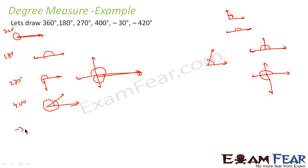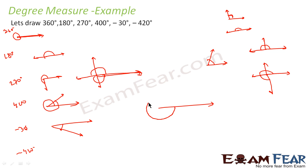For minus 30 degrees: you start with the initial side and rotate 30 degrees in the clockwise direction, giving minus 30. For minus 420 degrees: you take one full clockwise round of minus 360, and then add another minus 60, so the total is minus 420. The full clockwise round plus the additional 60 degrees makes minus 420.